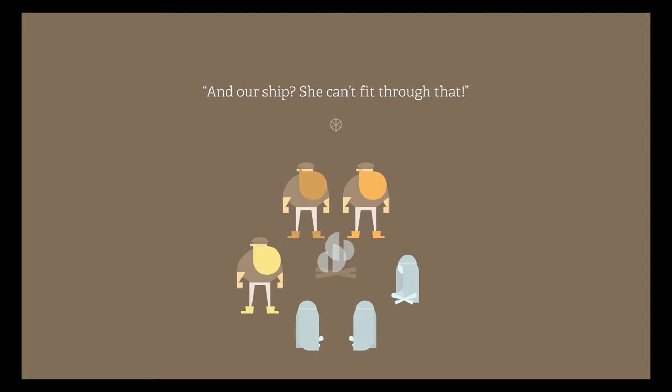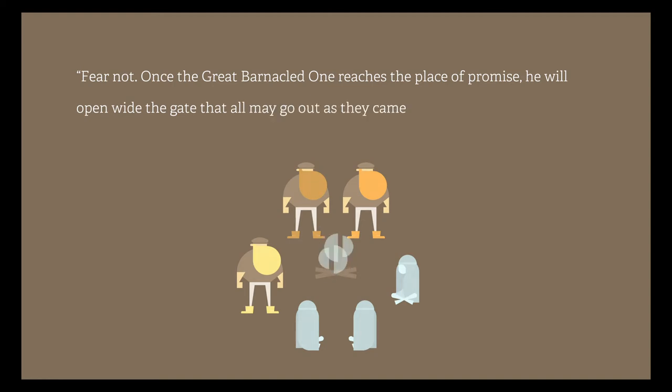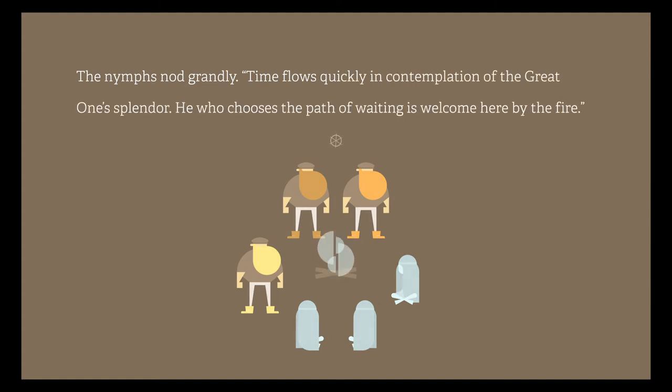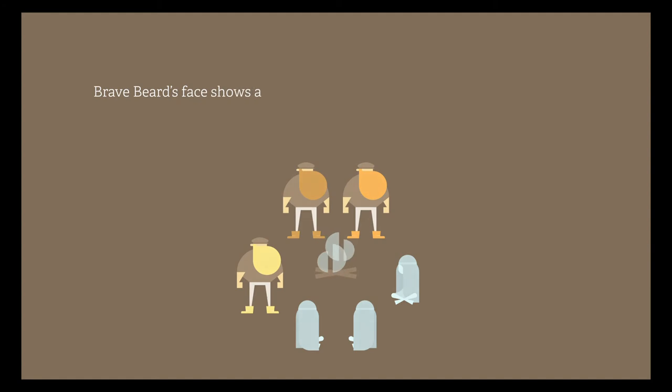And our ship? She can't fit through that. Fear not. Once the great barnacled one reaches the place of promise, he will open wide the gate that all may go out as they came in. So either we escape with no ship, or wait for the creature to open his maw? The nymphs nod grandly. Time flows quickly in contemplation of the great one's splendor. He who chooses the path of waiting is welcomed here by the fire. Brave beard's face shows alarm. I think we'd prefer to look around first.